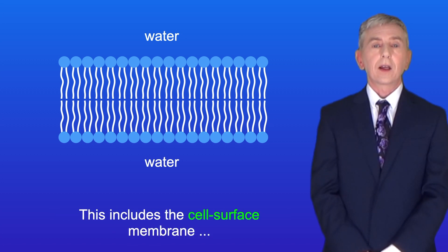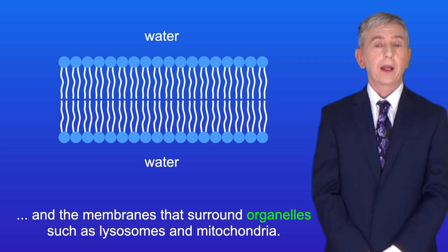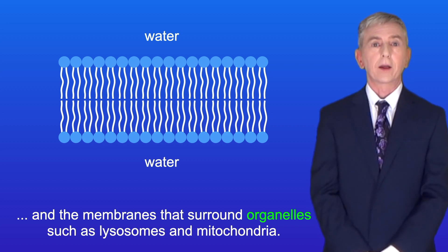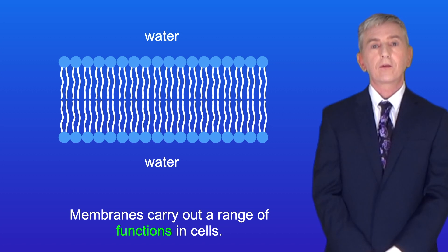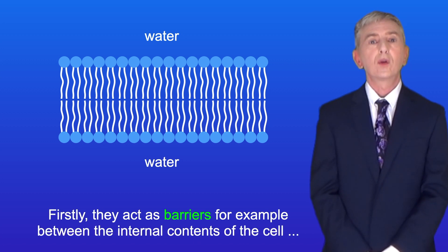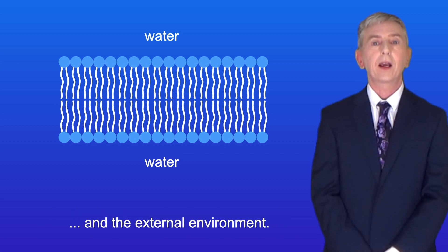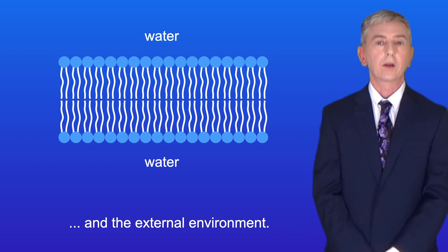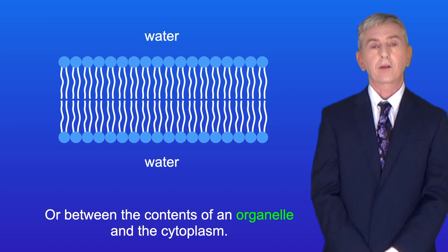The phospholipid bilayer is the basis of all cell membranes. This includes the cell surface membrane and the membranes that surround organelles such as lysosomes and mitochondria. Membranes carry out a range of functions in cells. Firstly they act as barriers — for example between the internal contents of the cell and the external environment, or between the contents of an organelle and the cytoplasm.